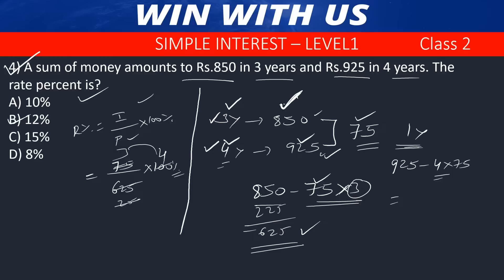The formula I = PTR/100 or A = P(1 + RT/100). The interest calculation is simple using these formulas.